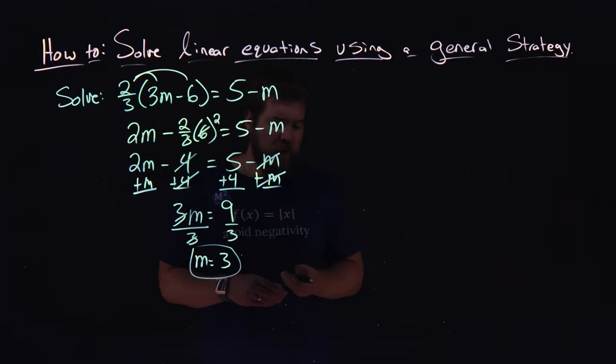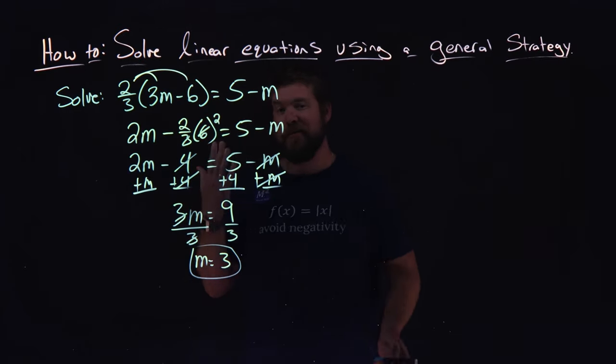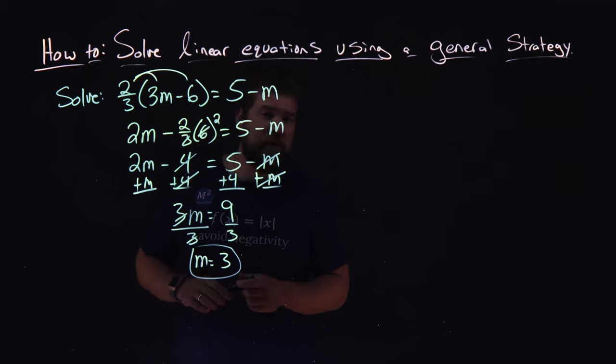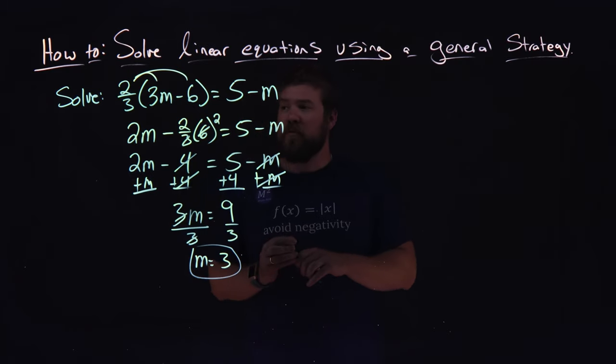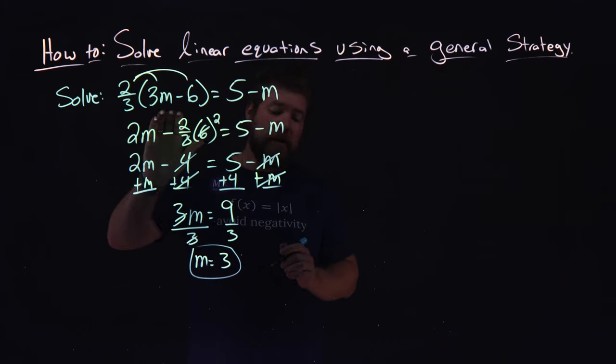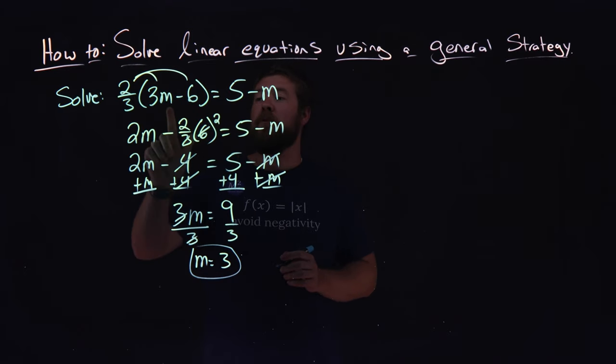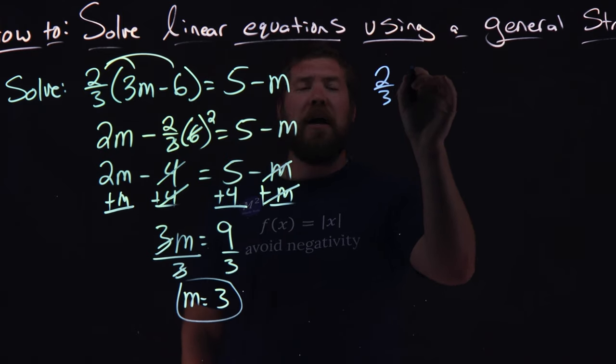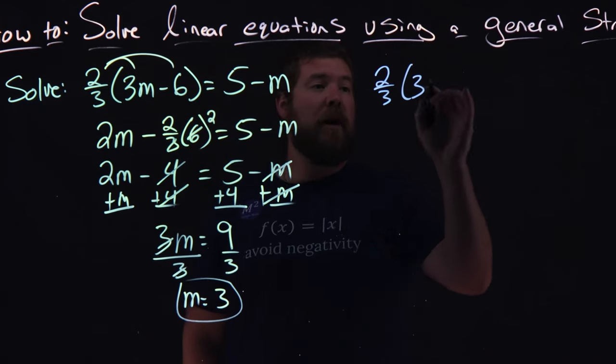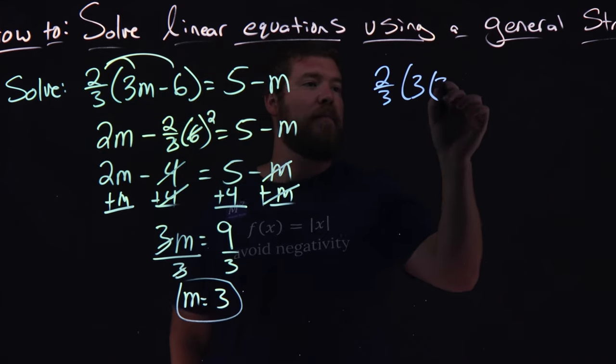Now one thing that's important to do is to check our work. Make sure we did this right. We got m equals 3, but we want to see was it actually correct. So what we're going to do is rewrite our original equation and substitute 3 in for m, just to be sure. So we take 2 thirds, and we have 3 times our m value, and I'm going to put 3. That's what we found.